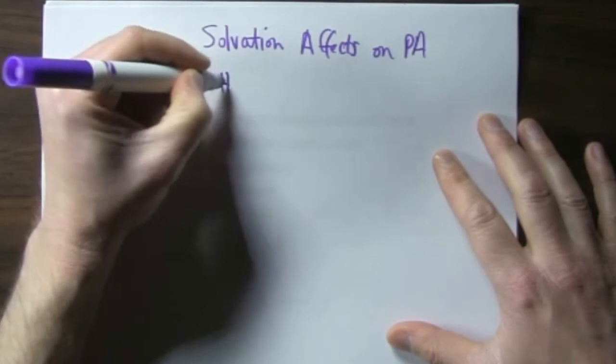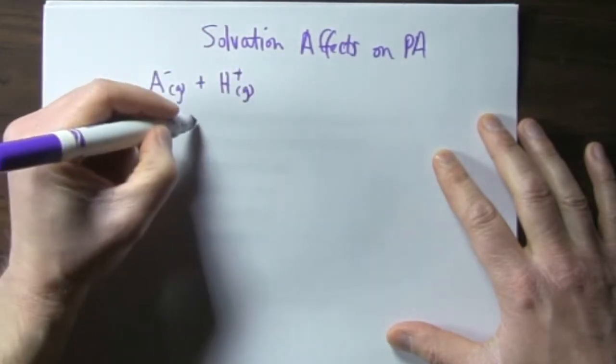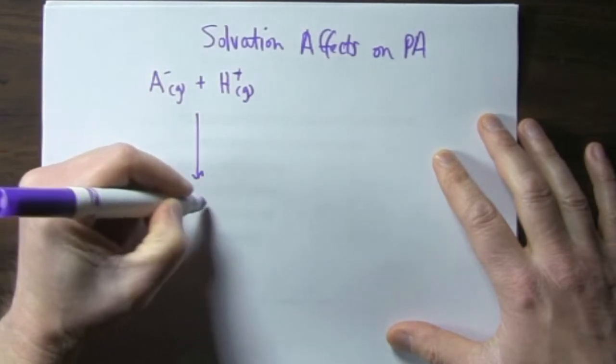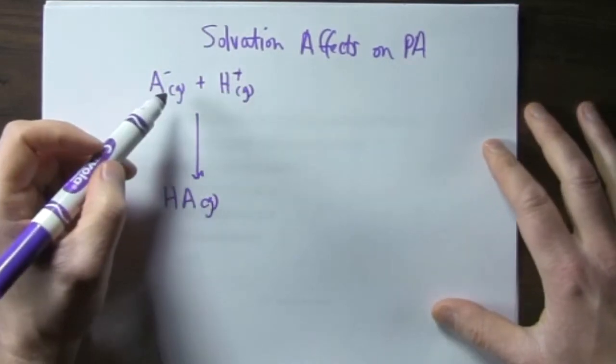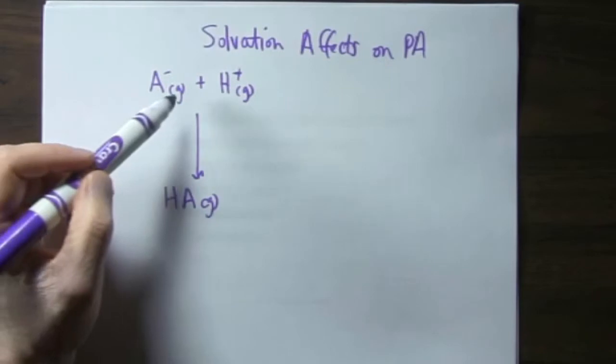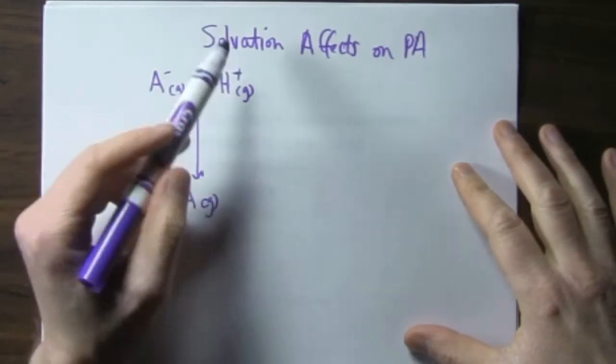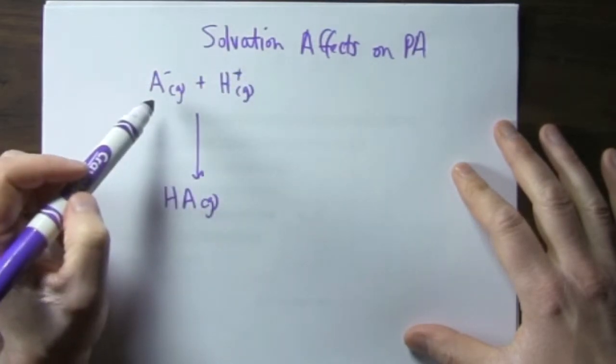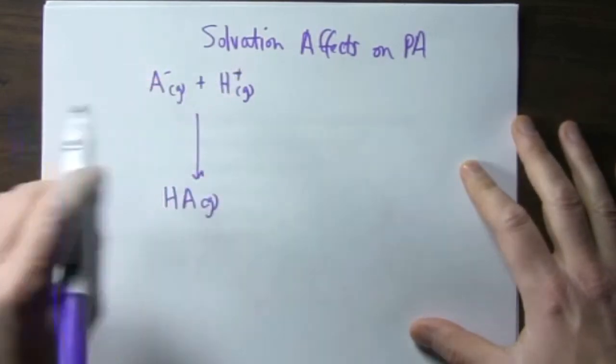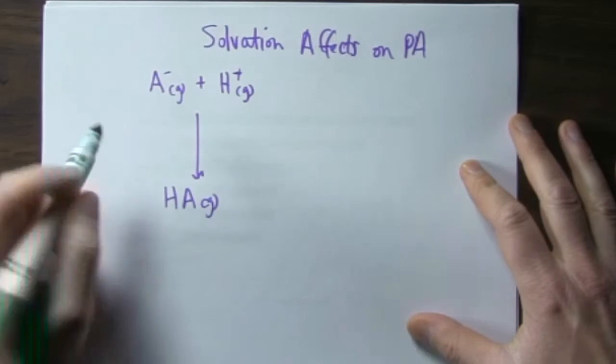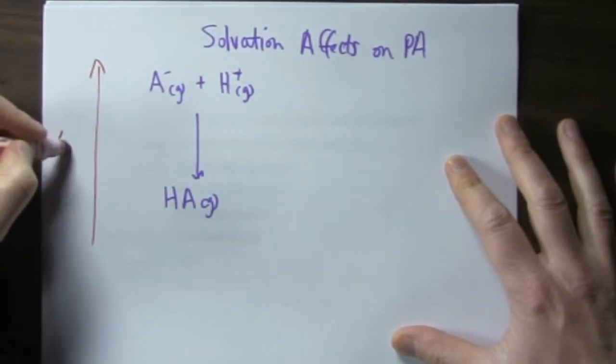Let's go back to our generic. We have our proton affinity, right? Our gas phase base and proton making gas phase molecule. And we saw that these species might react with water by themselves. But also, if we put it in solution, these species are going to be surrounded by water molecules. And so we're going to lose some energy. This is energy on the axis here, delta H.